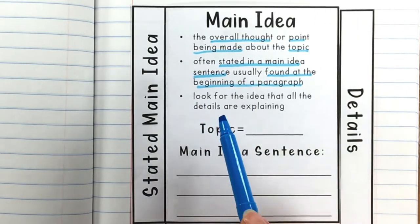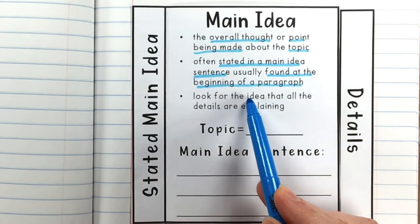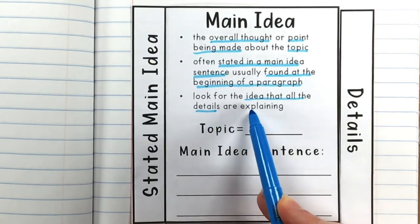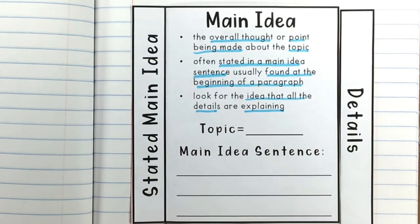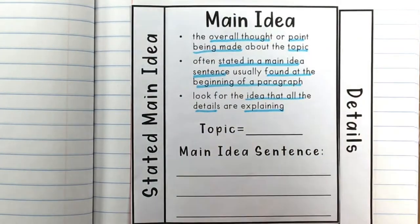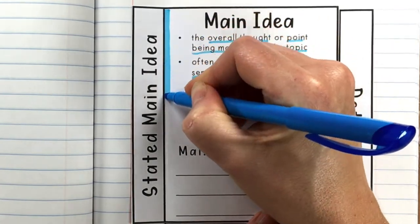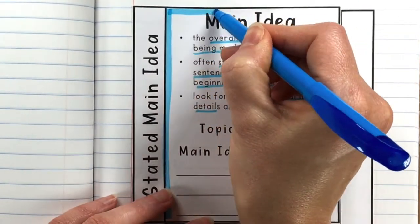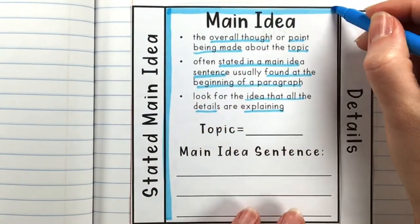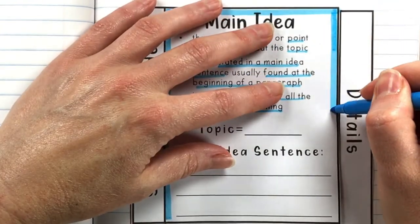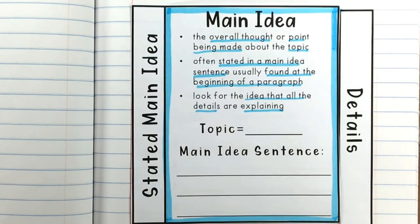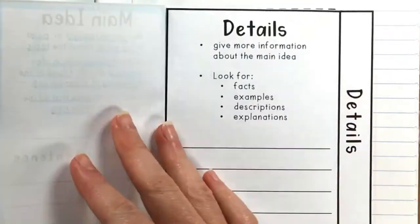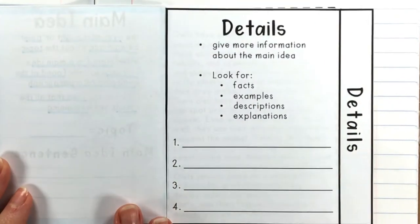What we need to look for is the idea that all the details are explaining. We're going to talk about details in just a second, but we're looking for what the whole paragraph is giving us more information about. We are going to use blue to find the main idea in our passage, so I'm going to highlight it in blue so we can remember that blue represents the main idea.